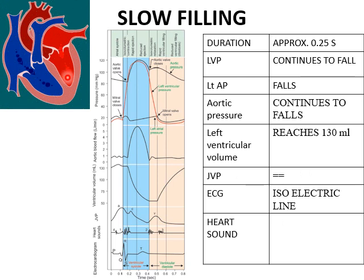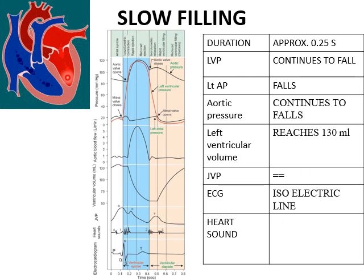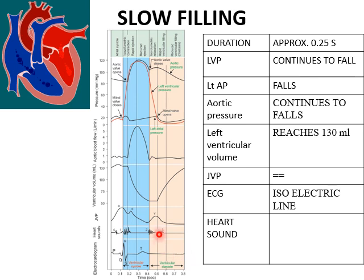The last phase of ventricular diastole is the slow filling phase, lasting about 0.25 seconds. There is a further fall in left ventricular and left atrial pressure; the aortic pressure also continues to fall. Left ventricular volume rises slowly to 130 ml — the end-diastolic volume. No JVP wave is seen, the ECG shows an isoelectric line, and no heart sound is heard during this phase. This completes the description of the various phases of the cardiac cycle.